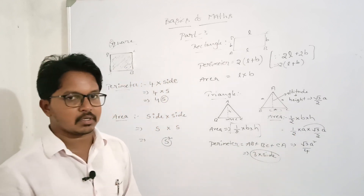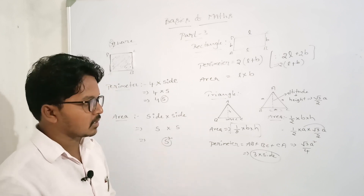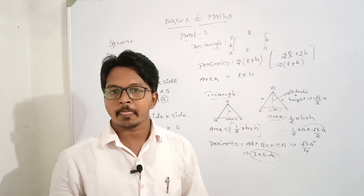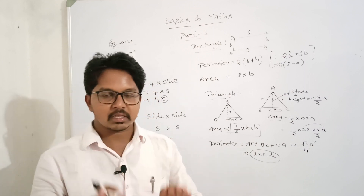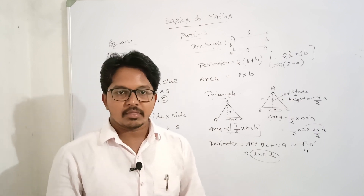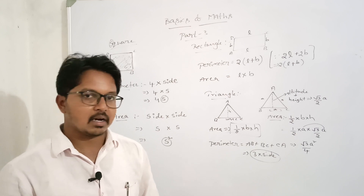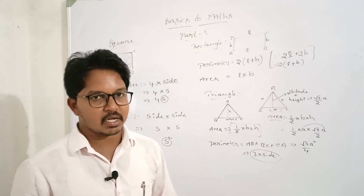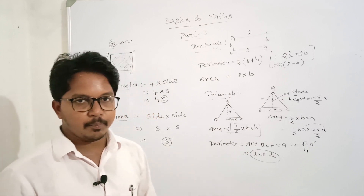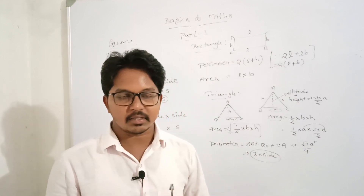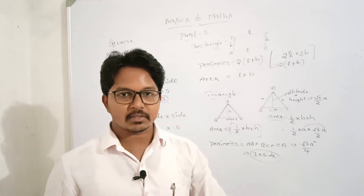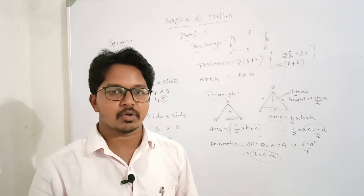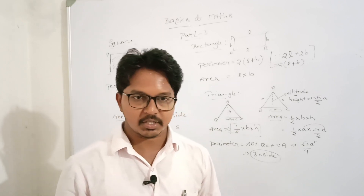So the perimeter formula is 3 into side. These are the basics for square, rectangle, and triangle — the formulas for perimeter and area. Perimeter means the total length of the figure is called as perimeter. Area means the empty space inside a closed figure is called as area. So we discussed formulas for each. Don't forget them — learn them by heart, take notes, and prepare. It will be very useful for you. With this, Basics of Mass Part 3 is complete. Next, Basics of Mass Part 4 will be discussed in the next video. If you liked this video, subscribe, like, and share with your friends. Thank you.